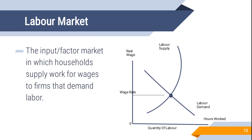The government also plays a role in the labor market by determining minimum wages so that no capitalist can exploit labor by offering insufficient pay. The government fixes a minimum wage that everyone must pay to lower-level staff and those who are deprived, ensuring fair compensation for all workers.